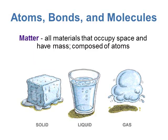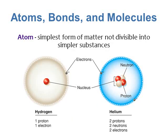We're going to start off with something called matter. Matter is just anything that takes up space, so it occupies space and has mass. This includes you, includes the table — basically anything around us is considered to be matter. And all of these items are composed of atoms. An atom is the simplest form of matter, and it's not divisible into simpler substances.